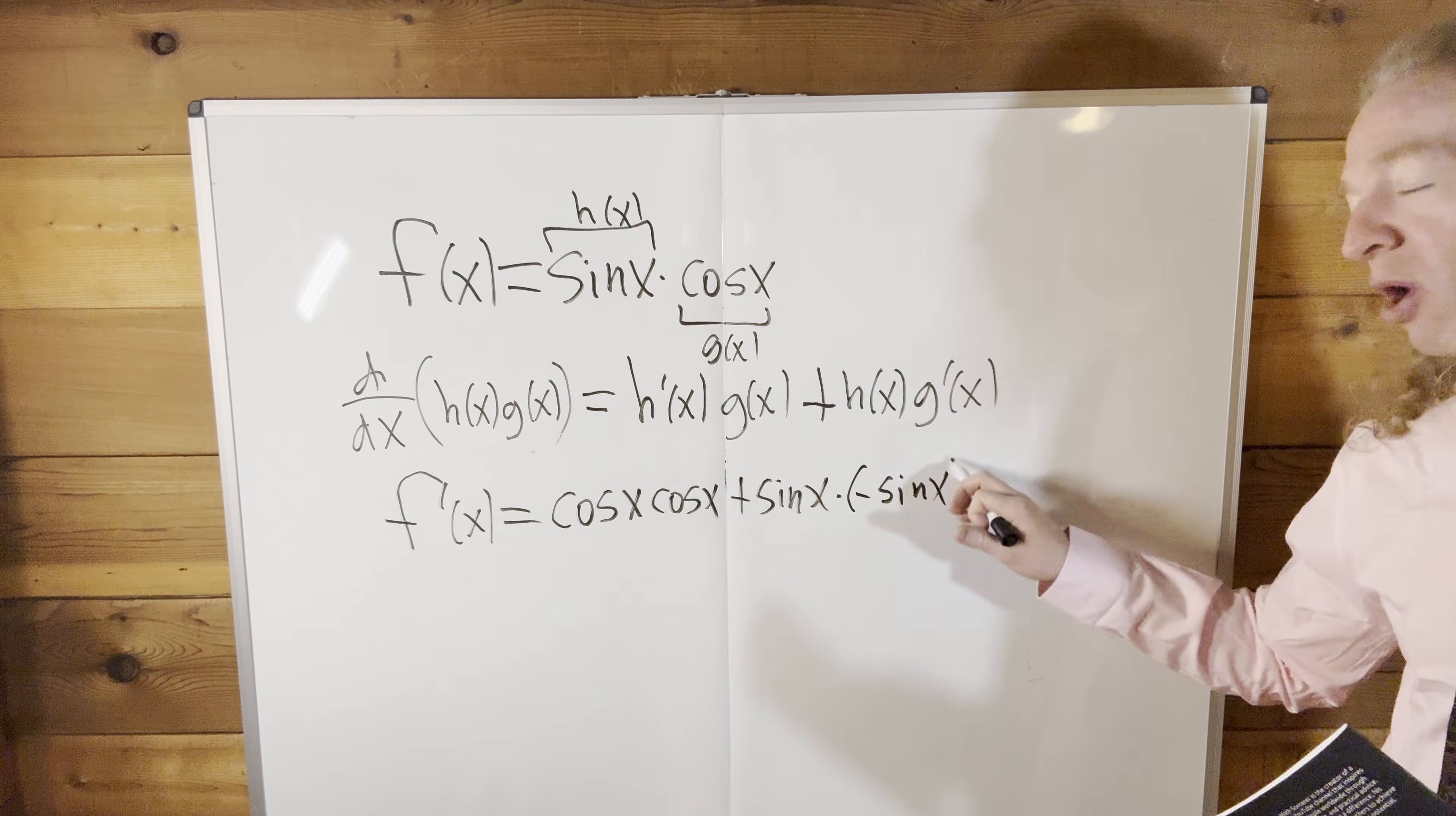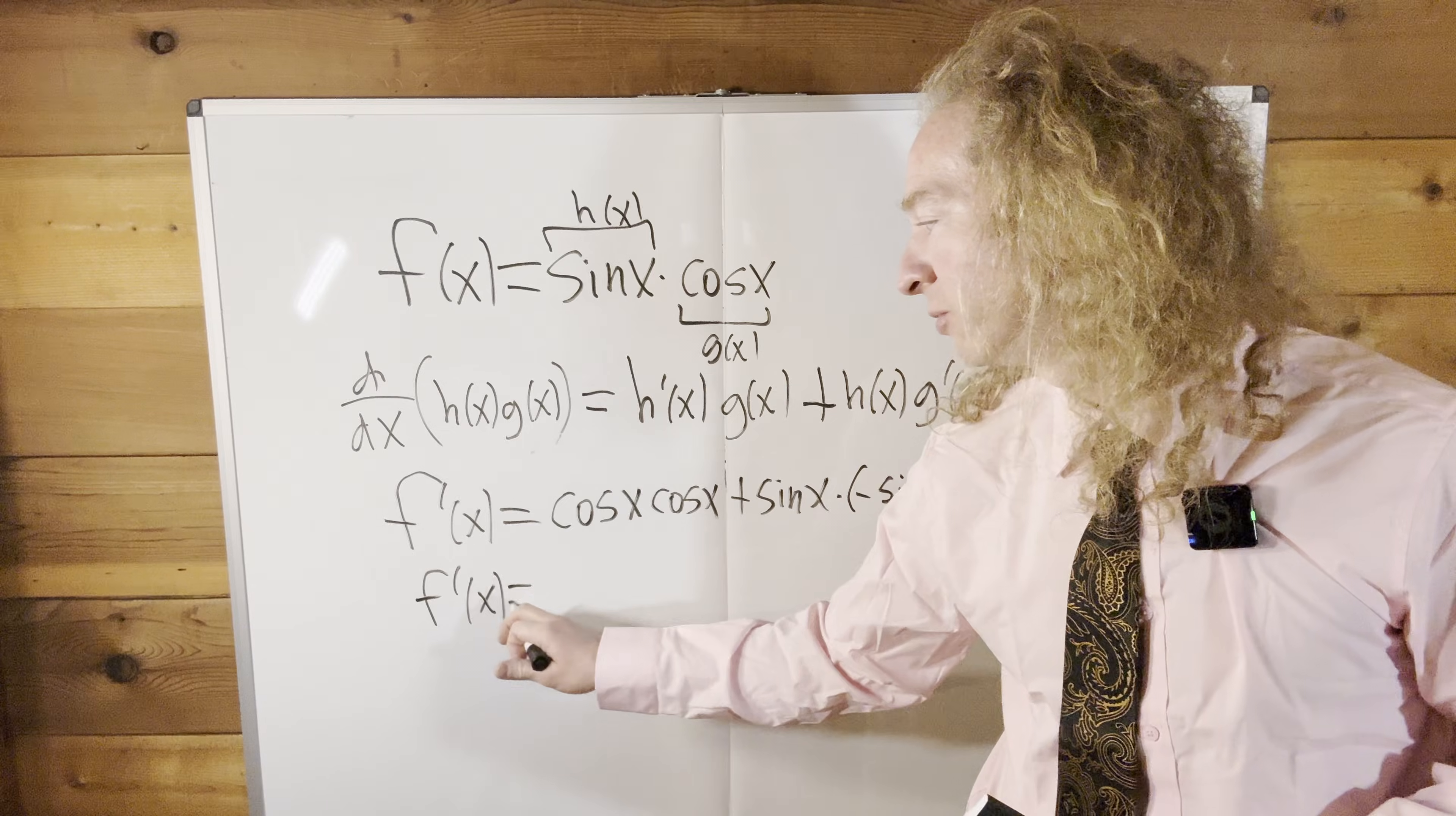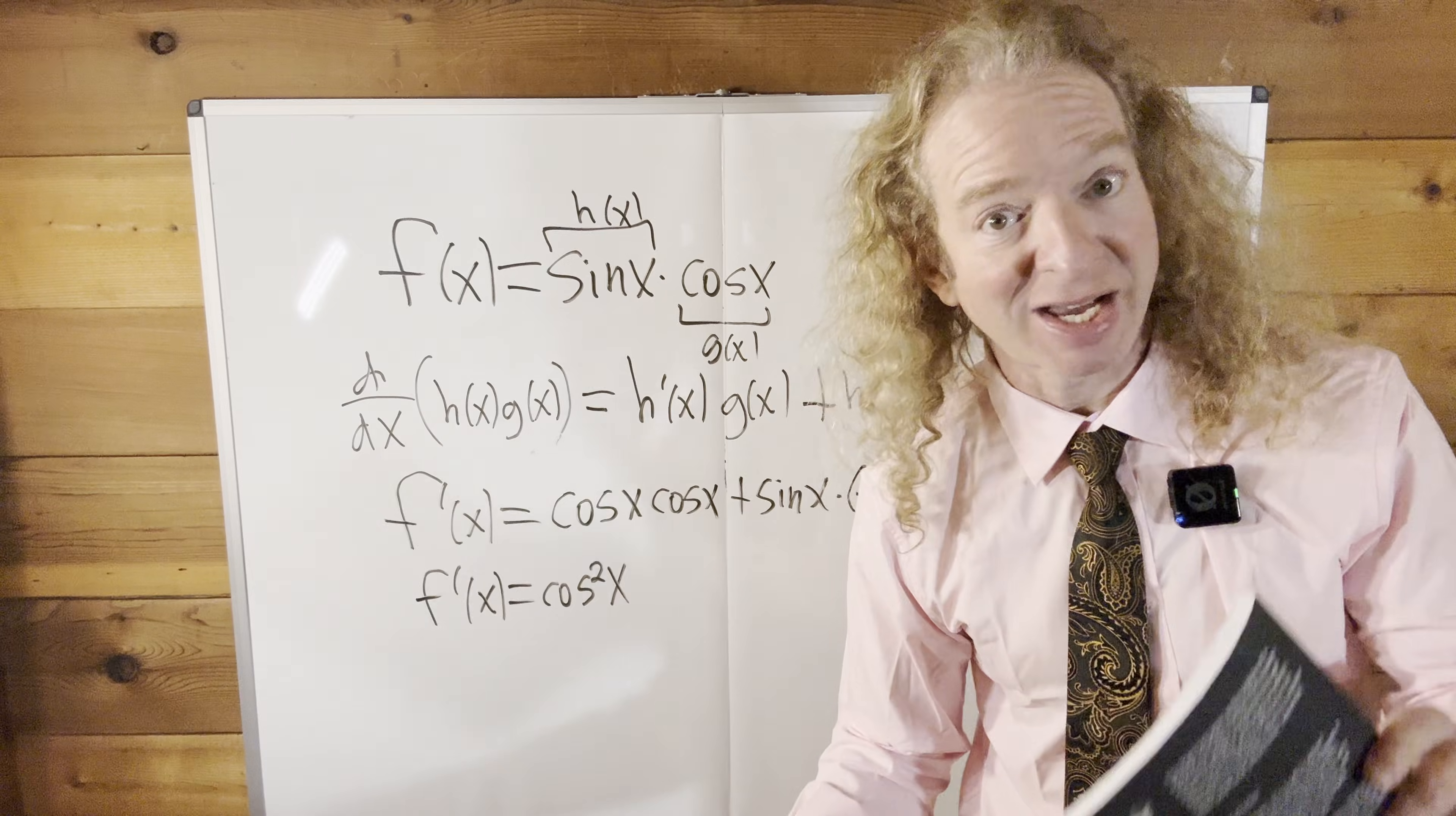Now, we don't want to leave our answer like this. We want to clean this up. So what we can do now is this is cosine squared. So f prime of x is equal to cosine squared x, and then sine times sine is sine squared, so we have minus sine squared.